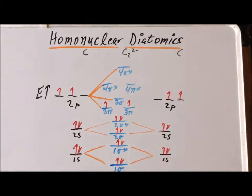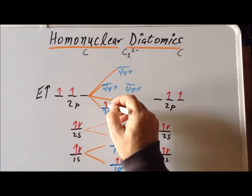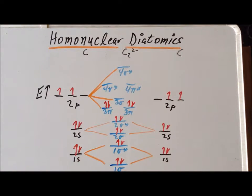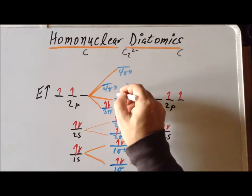But since we still have more electrons to go, we end up filling up the 3 pi level. That's 12 electrons. We have two more electrons to allocate, and these end up going into the 3 sigma.